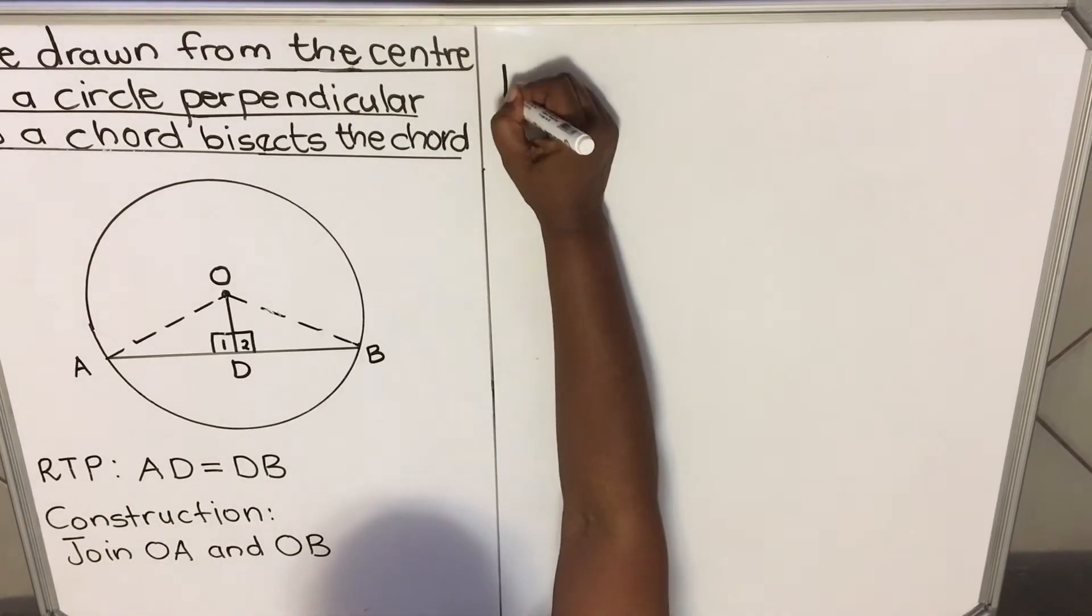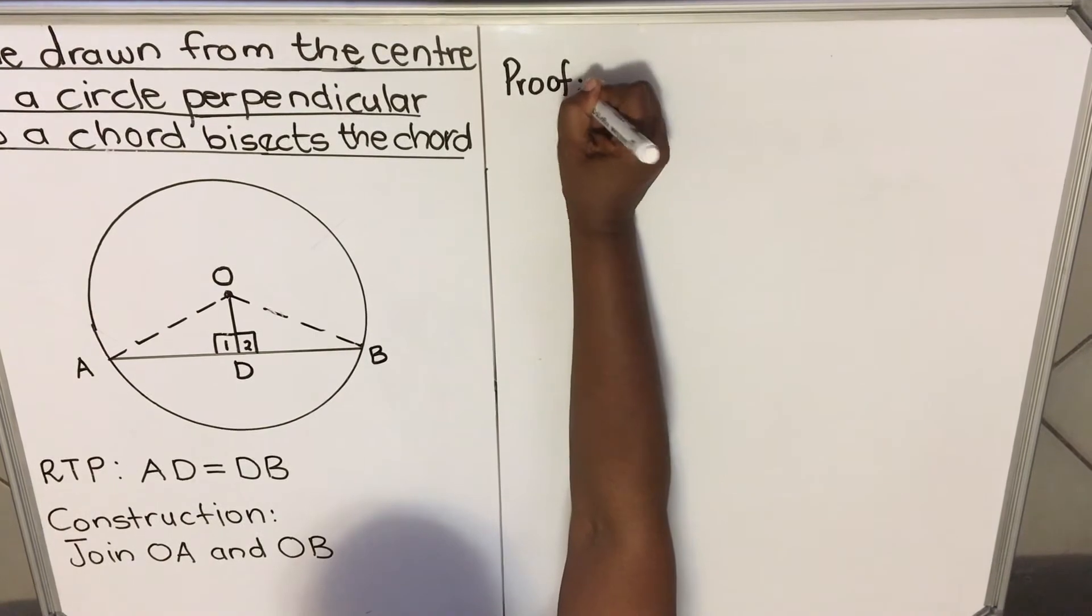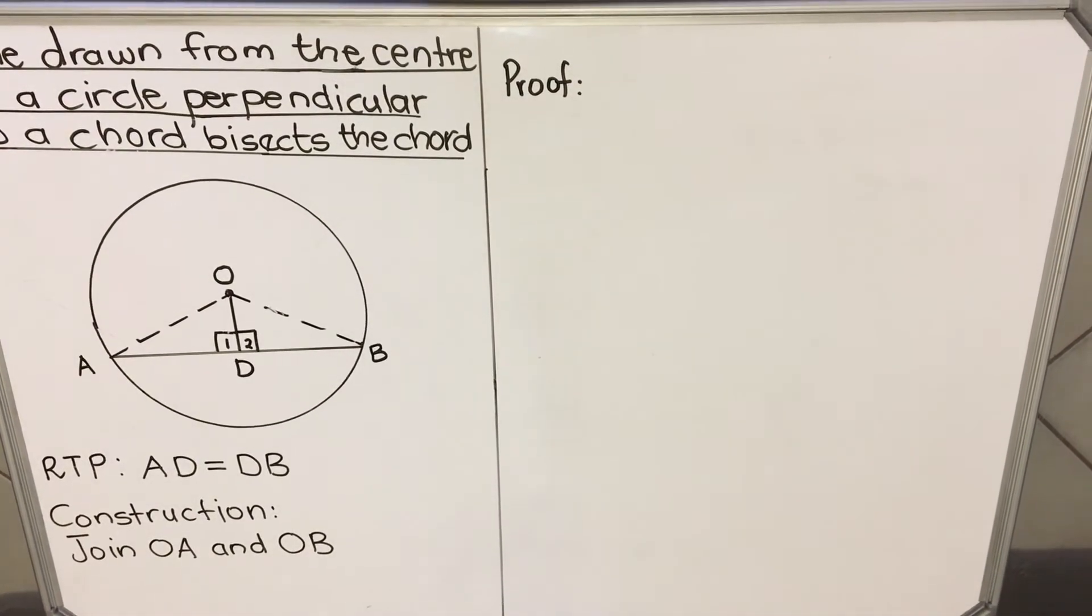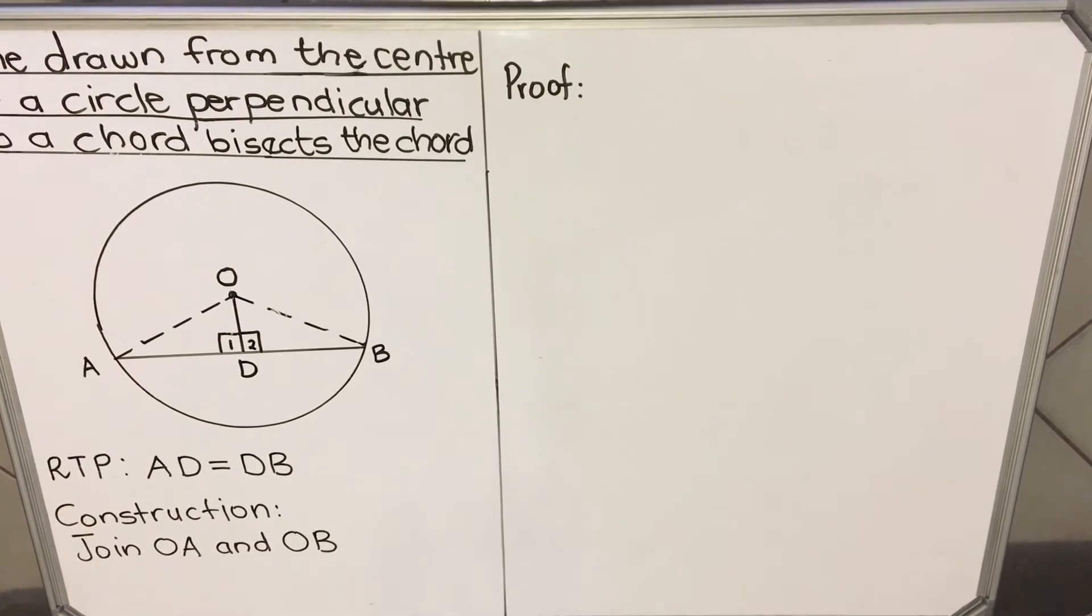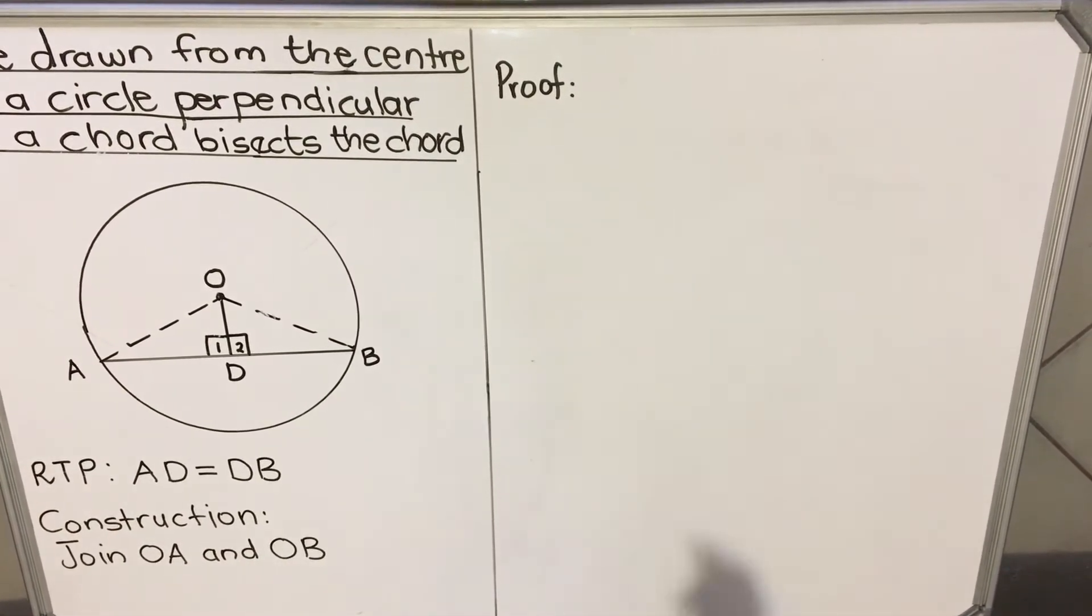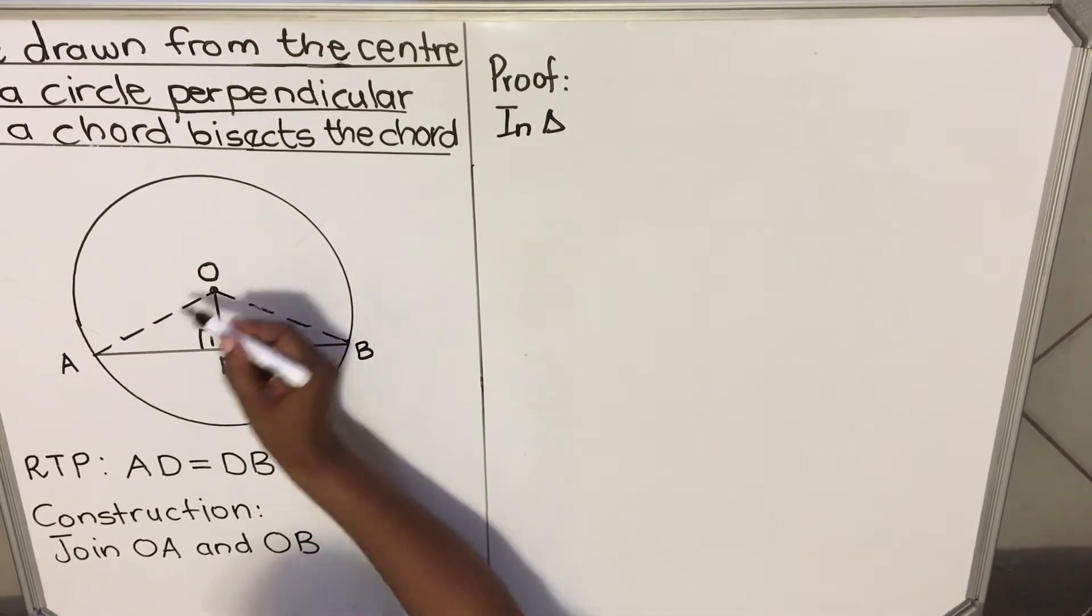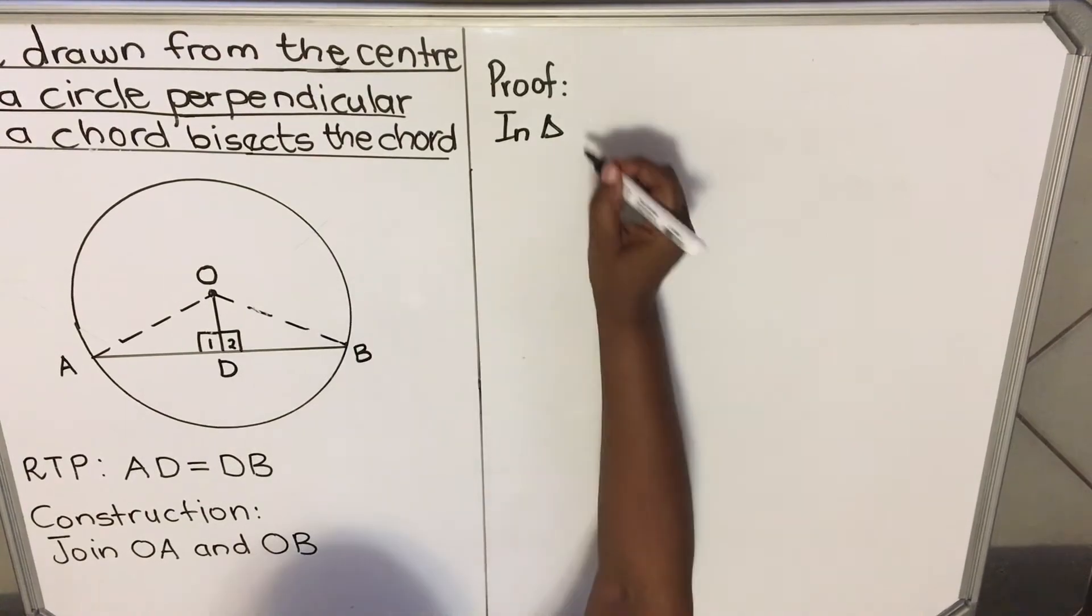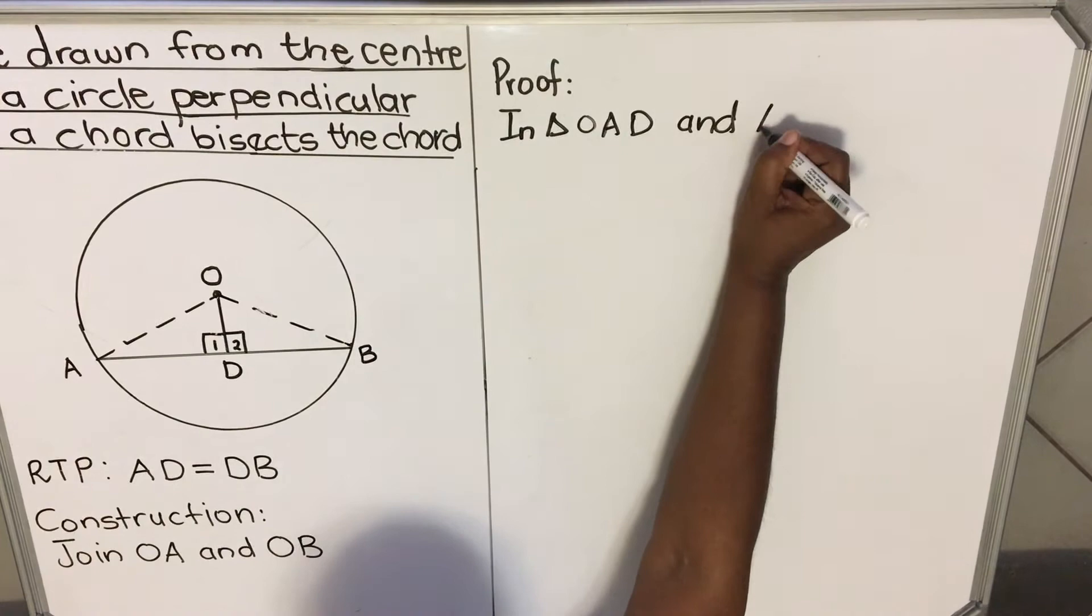Okay. Let's go to the next step. Now the proof. For this theorem, you also need to memorize. For all the theorems. In this theorem, which congruency do we use? In this theorem, you use congruency that we taught in grade 9. So you're going to say in triangle, then you write the first triangle, OAD, OAD, and triangle, then the other, ODB, ODB.